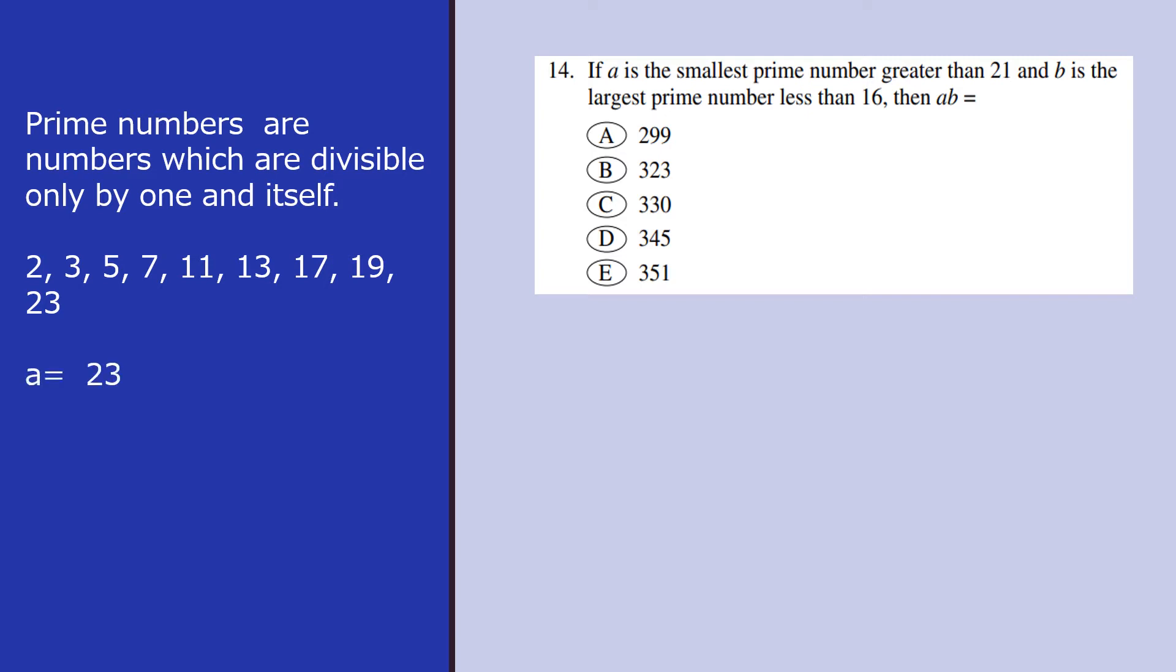If I am trying to find A which is the smallest prime number greater than 21, that is 23. B is the largest prime number less than 16, so it should be 13. And the product AB will be 299 and hence the answer is A.